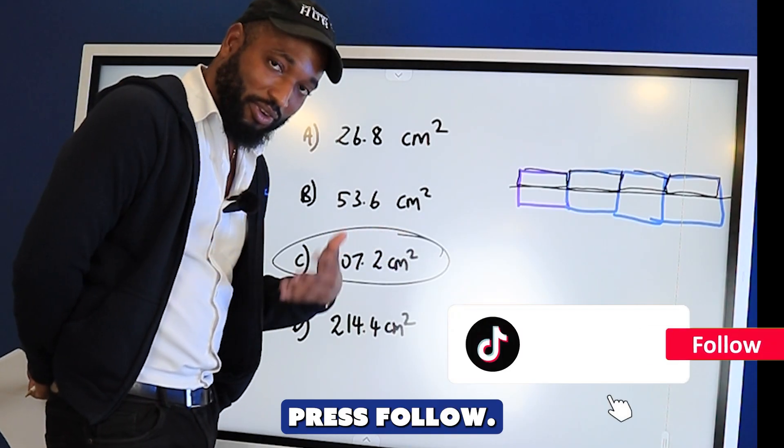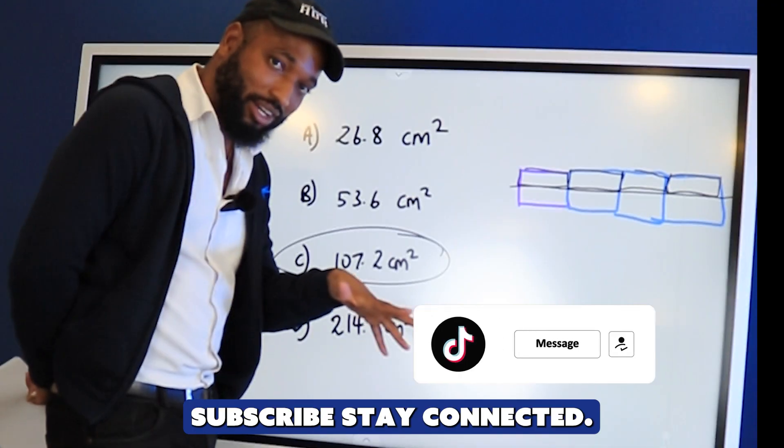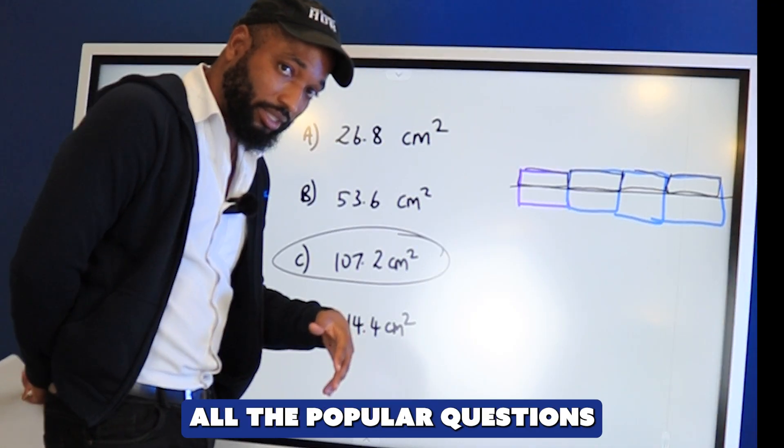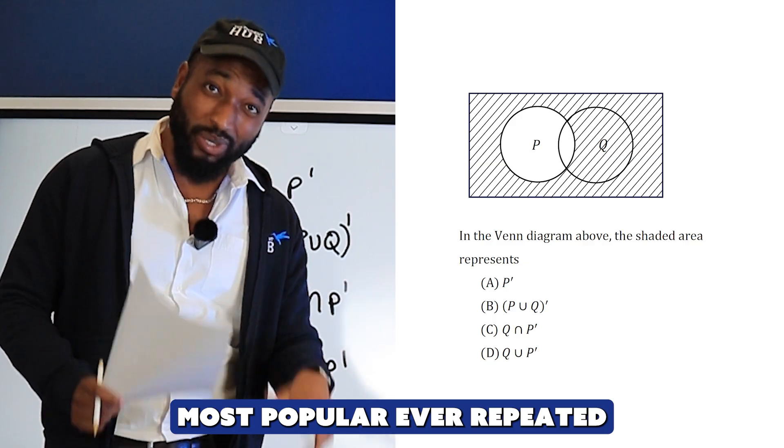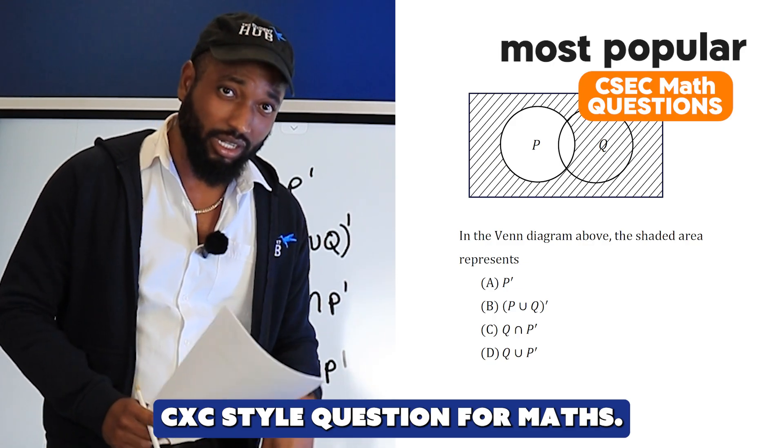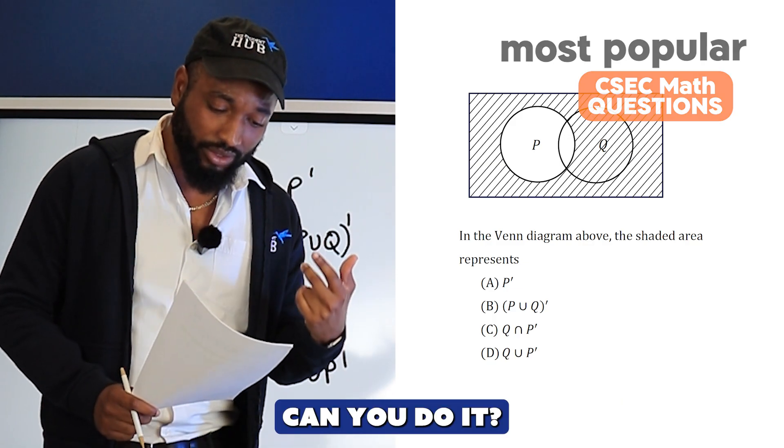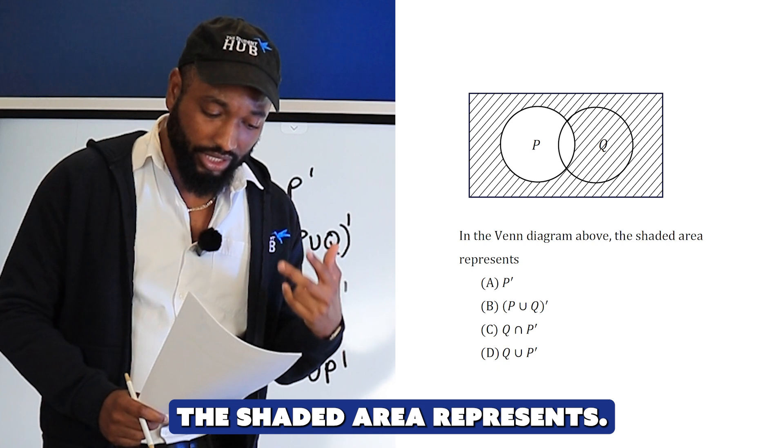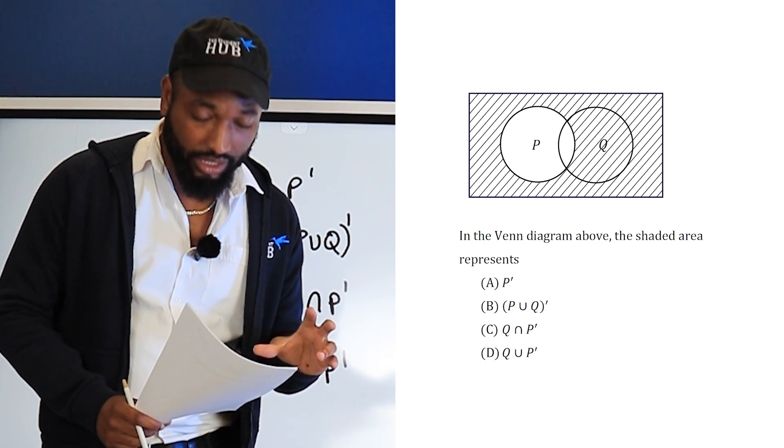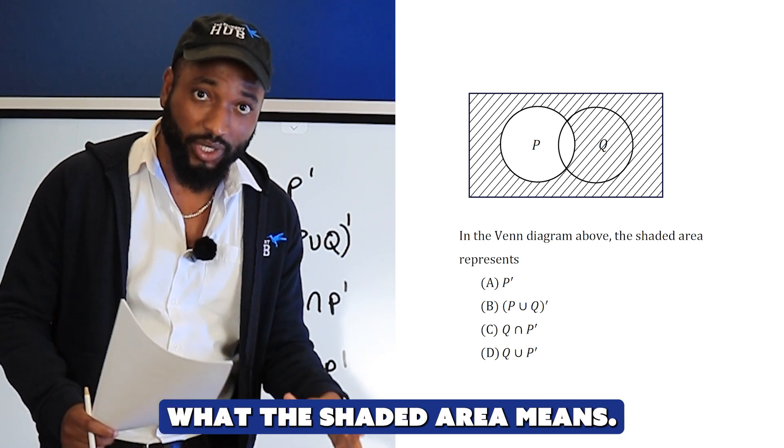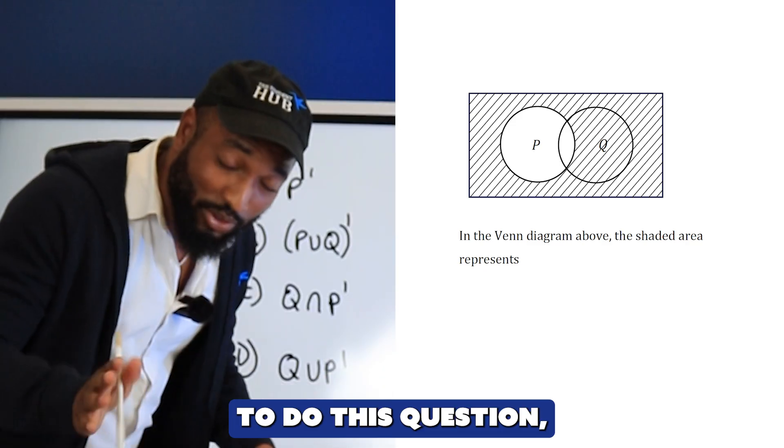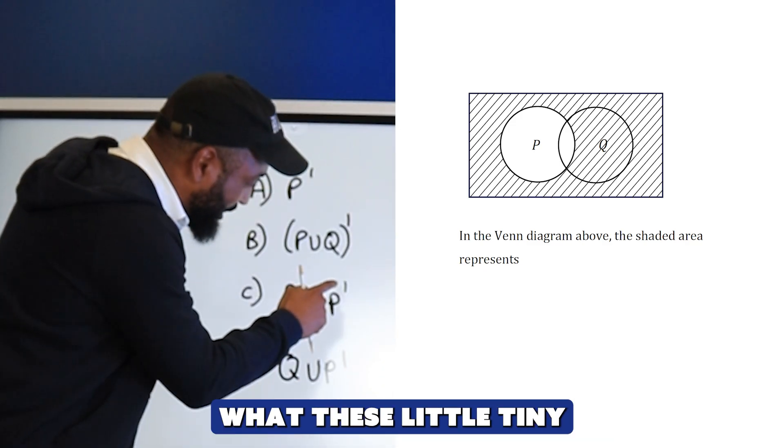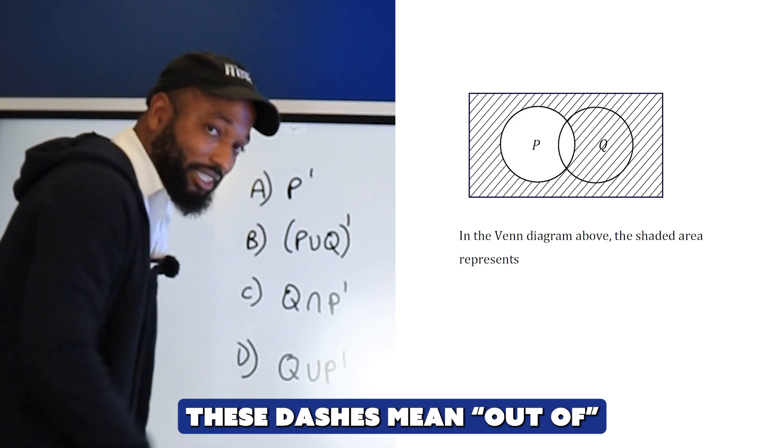Another one of the most popular, ever-repeated CSEC style question formats. Here we have a Venn diagram - the shaded area represents what? To do this question, you just need to understand what these little tiny dashes mean. These dashes mean complement, or out of.